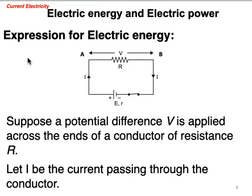Now let's see how much heat energy will be produced. For this purpose, we take a resistance R and apply a potential difference V across its ends. Let I denote the current passing through this conductor.